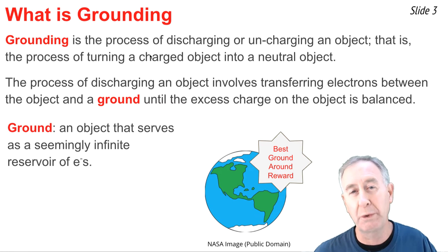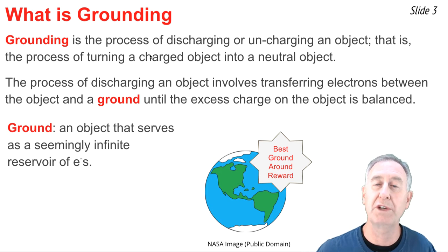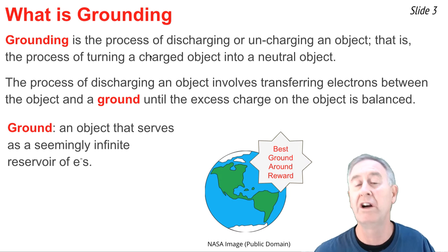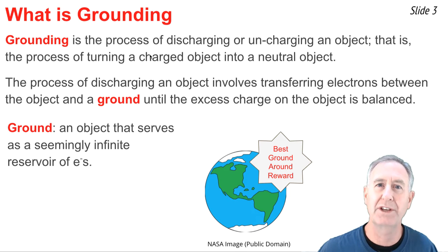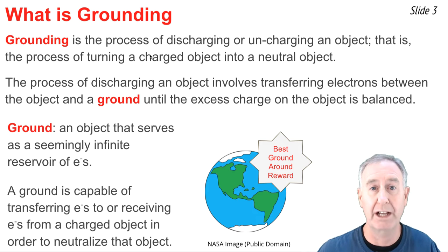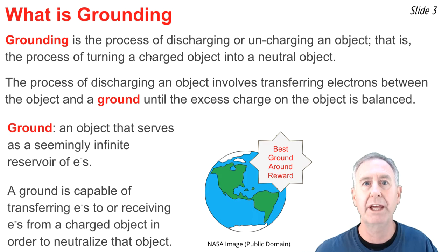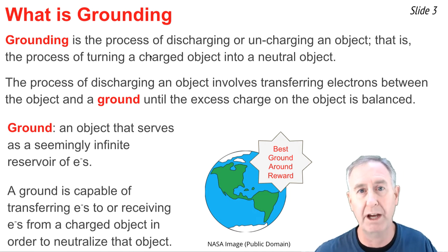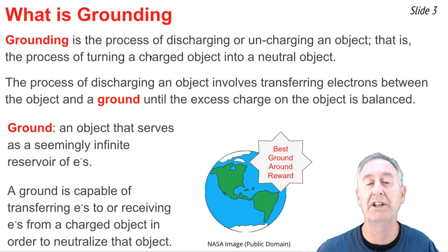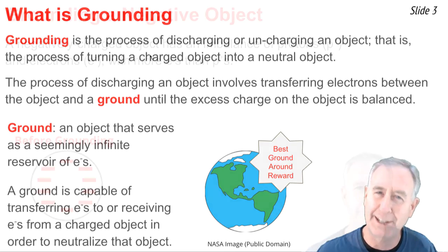When we use the word ground in this sentence, we're referring to a seemingly infinite reservoir or supply of electrons. When we ground an object, there's a flow of electrons between object and ground, either to the object or from the object, that occurs until the object becomes neutral and has a balance of protons and electrons.